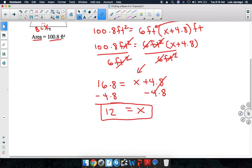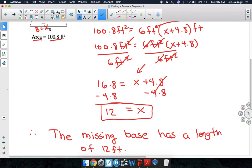So we usually finish up by writing a sentence. Let's do that. Therefore, the base, or in this case, the missing base, has a length of 12 feet. And that's how we can find a base of a trapezoid. Thank you for watching, and have a wonderful day.